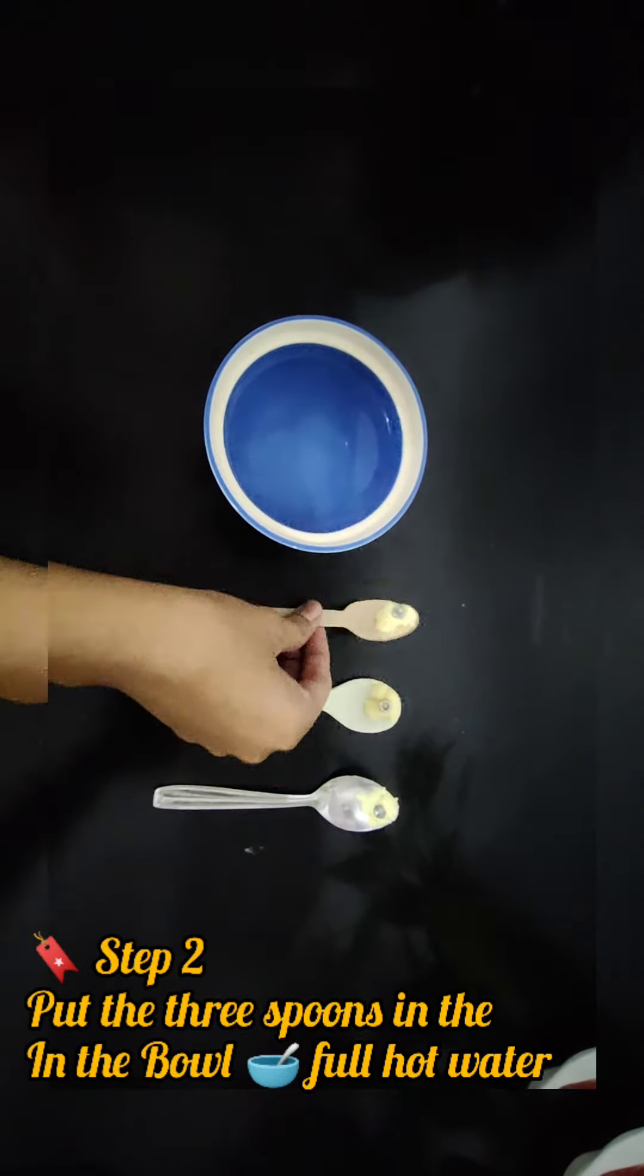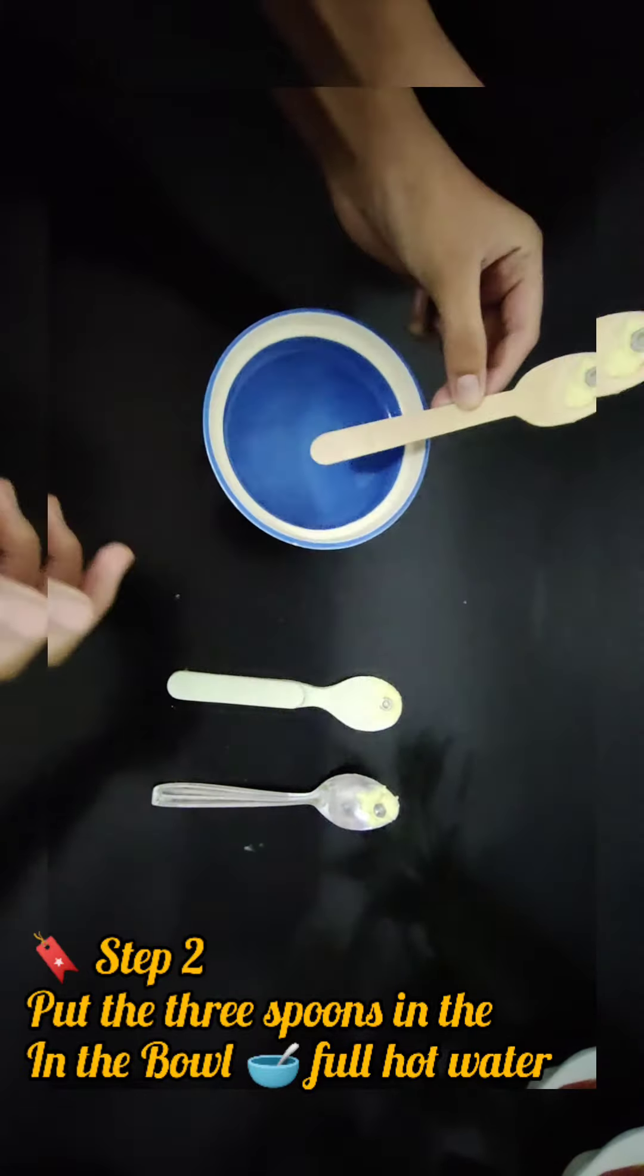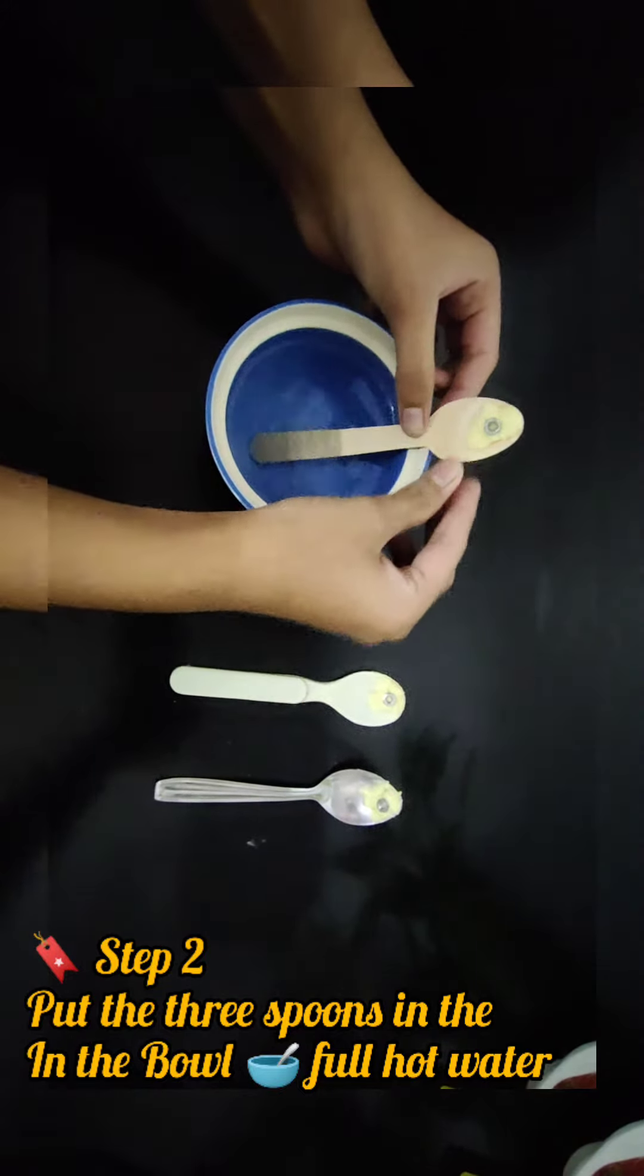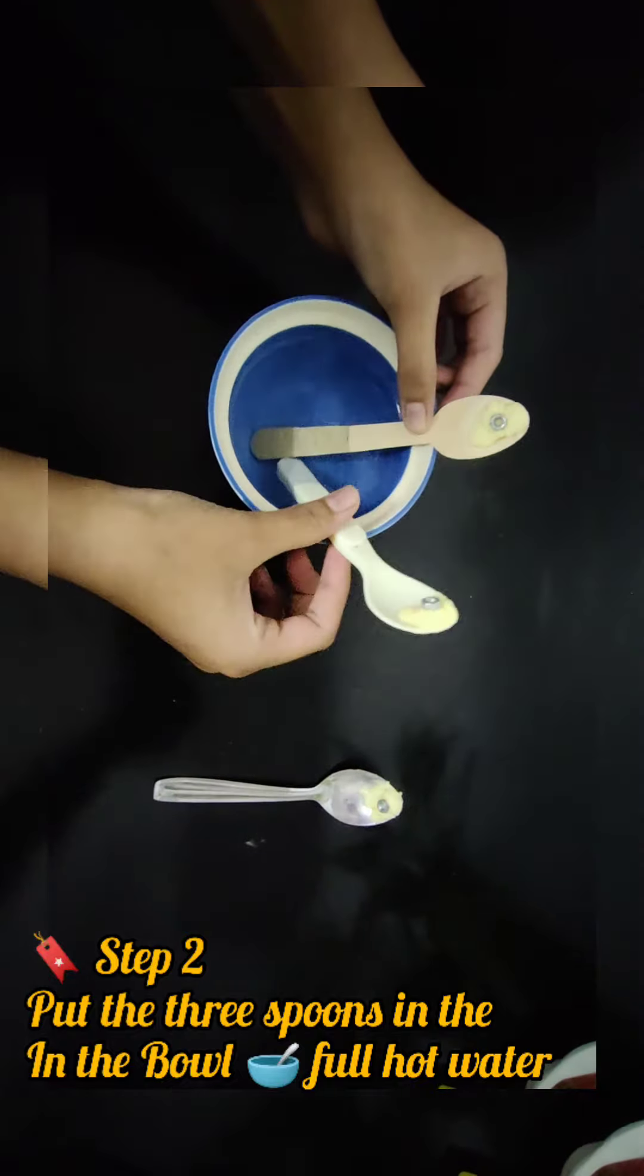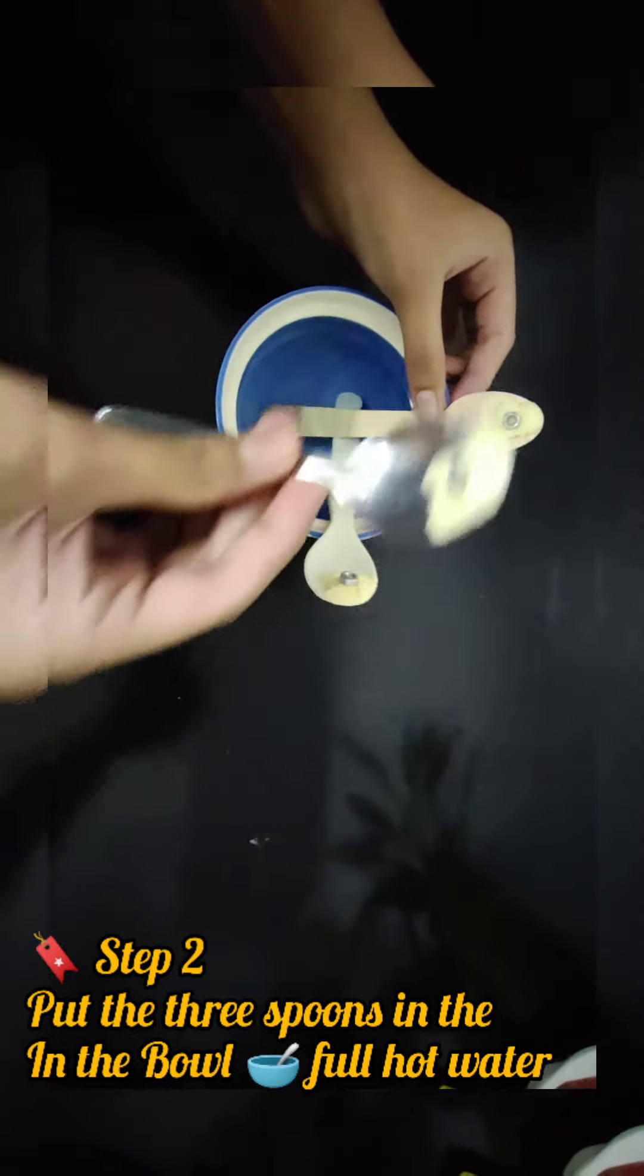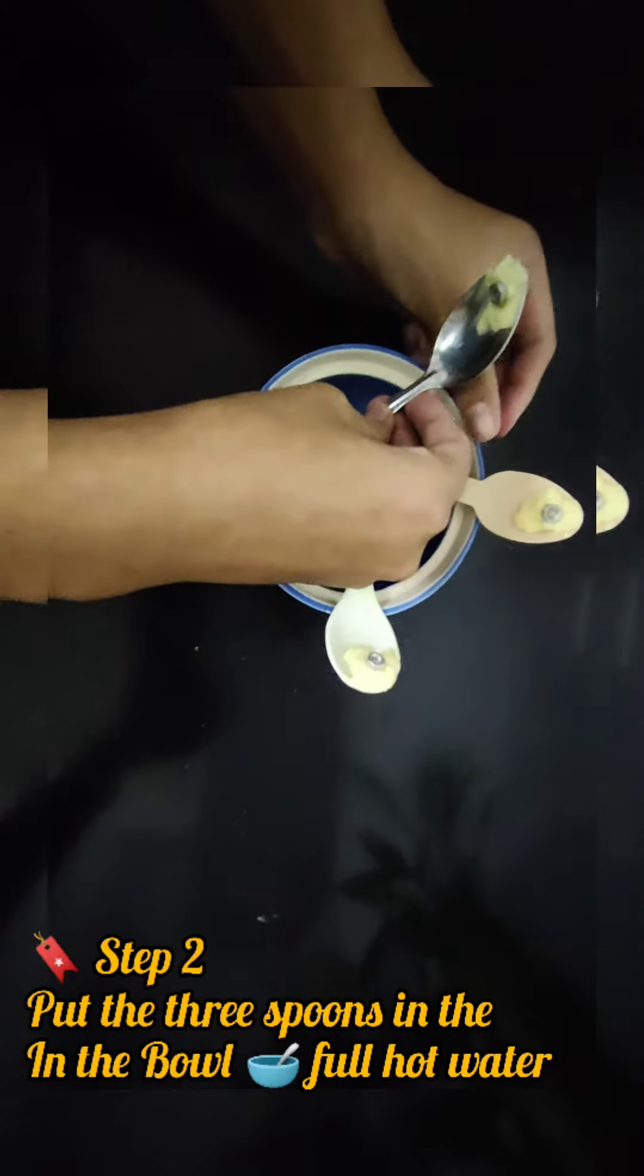Step 2: Put the three spoons in the bowl full of water. Just remember that the temperature of the water in the bowl must be 100 degrees Celsius and the bowl must be strong enough to hold such hot water.